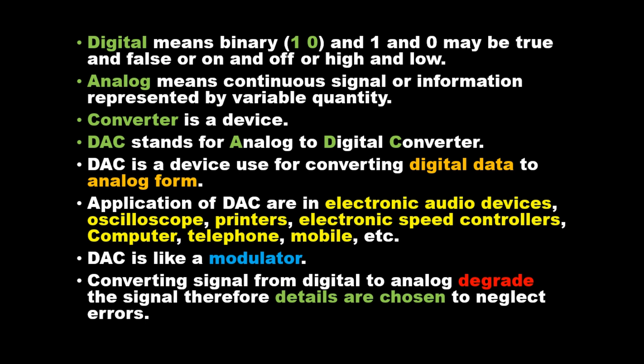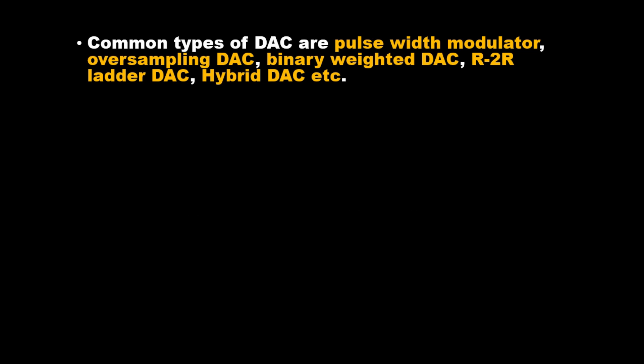Converting a signal from digital to analog degrades the signal, therefore certain details are chosen to neglect errors. Common types of DAC are pulse width modulator, oversampling DAC, binary weighted DAC, R-2R ladder DAC, and hybrid DAC.